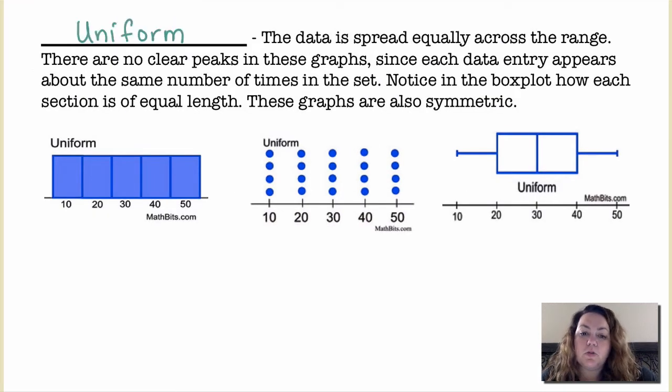A uniform distribution is where all the data is spread equally across the range. There are no clear peaks in the graph since each data entry appears about the same number of times in the set. Notice in the box plot how each section is of equal length. The graphs are also symmetric.